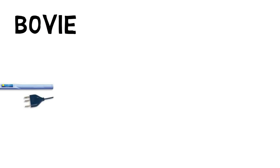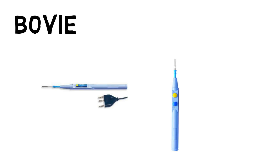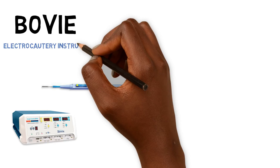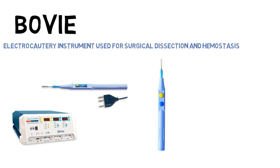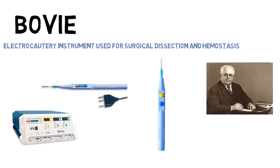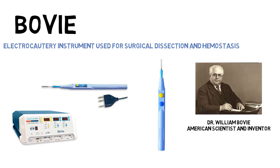Next is the Bovey. This is an electrocautery instrument used for surgical dissection and to obtain hemostasis or control of bleeding during surgery by using a high frequency electrocurrent. This instrument was invented by Dr. William Bovey, an emeritus scientist and inventor who first introduced the technique to a colleague who had previously been unsuccessful in removing a tumor from a patient's head due to excessive bleeding.